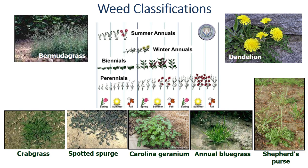Weeds can be grouped according to their life cycles as annuals, biennials, or perennials. Annual weeds grow, reproduce, and die within one growing season — they reproduce by seed only. Annuals are divided into two groups: summer annuals and winter annuals. Summer annuals germinate in the spring, flower and produce seed in mid to late summer, and die in the fall. Some common summer annuals include pigweed, crabgrass, spotted spurge, and Florida pusley.